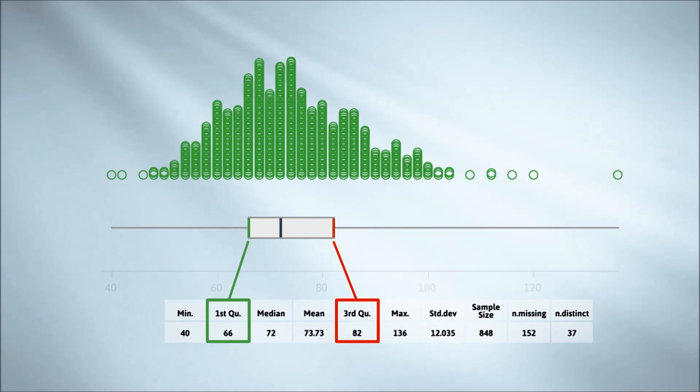Here are the actual values. The length of the box, which is the difference between the third and first quartiles, is called the interquartile range. The interquartile range is one of the standard measures of spread.